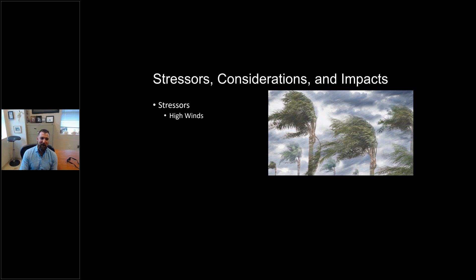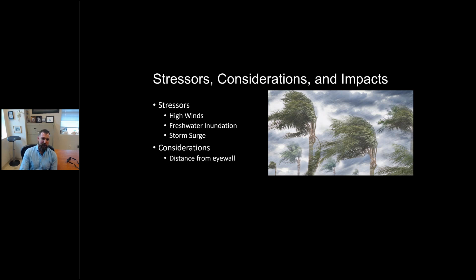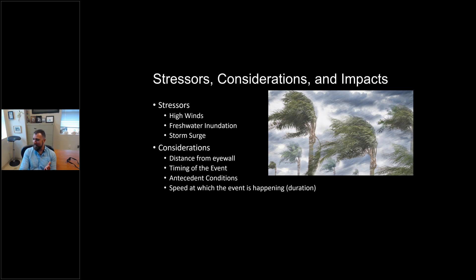In terms of stressors, we need to think about winds, freshwater inundation from rainfall and flooding, storm surge, how far you are from the eye wall, timing of the event, and conditions present at the time. Something we don't often think about is storm velocity — a really slow-moving storm like Florence over North Carolina has much more opportunity to drop lots of rainfall. The frequency at which events occur can also dictate, to some extent, how local areas respond.